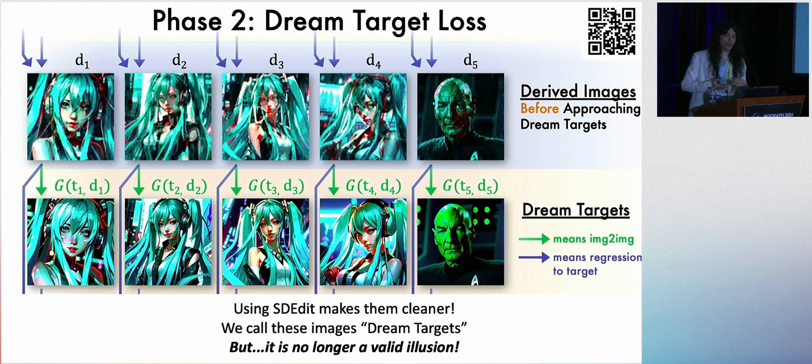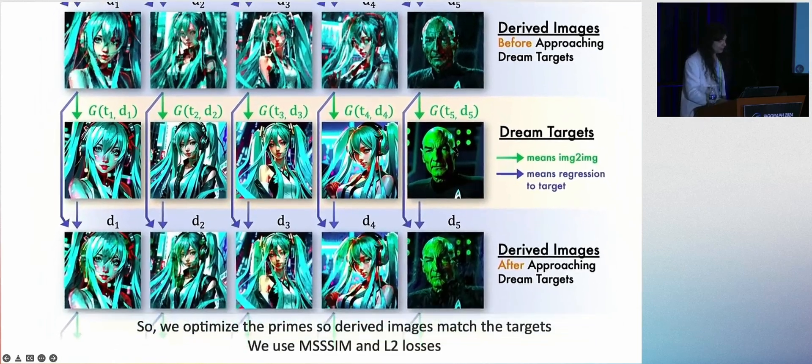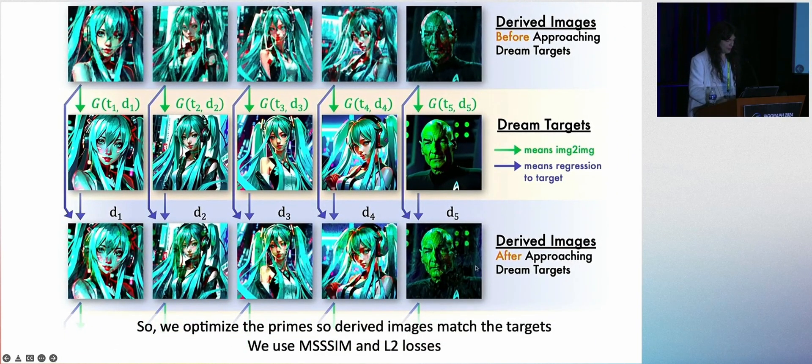But the problem is that these no longer satisfy that prime derived relationship. These four multiplied together do not equal Picard, whereas these four do. So what do we do? We optimize the four prime images so that they'll try to match these dream targets that we got from SDEdit as close as possible. And that makes it a lot smoother and gives more detail.